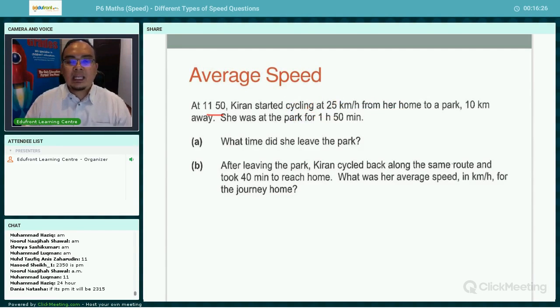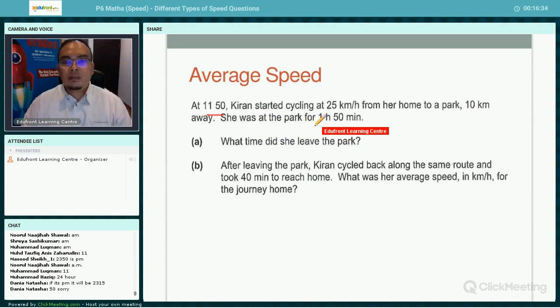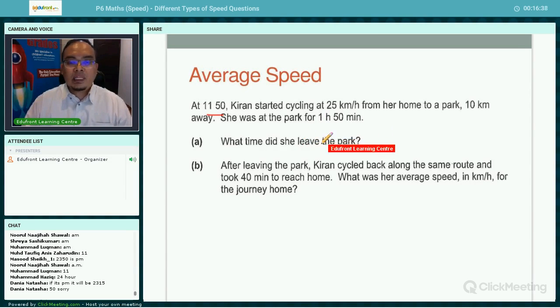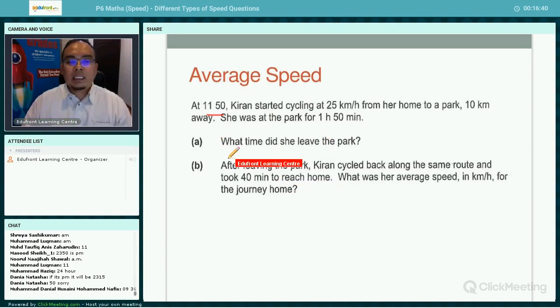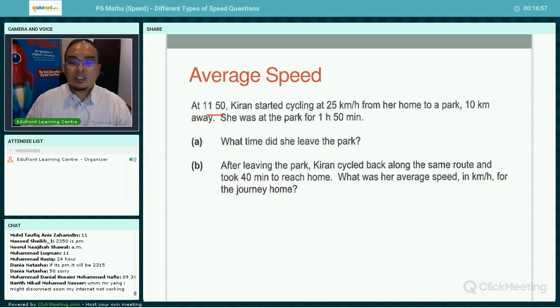Kiran started cycling at 25 kilometers per hour from her home to a park, 10 kilometers away. She was at the park for 1 hour and 50 minutes. Part A: What time did she leave the park? Part B: After leaving the park, Kiran cycled back along the same route and took 40 minutes to reach home. What was the average speed in kilometers per hour for the journey home?